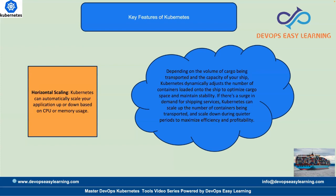Kubernetes is a container orchestration tool, meaning it is a tool that can manage containers — organize them, manage them, and make them communicate with each other. It has many features: self-healing (if a container fails, Kubernetes replaces it), automated rollback (you can roll back to a specific version), auto scaling (scale up or down depending on need), and auto discovery (containers can automatically discover and connect with each other).